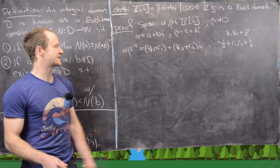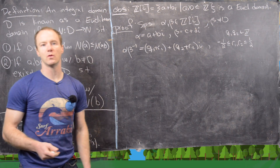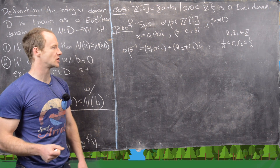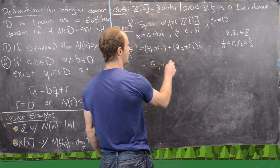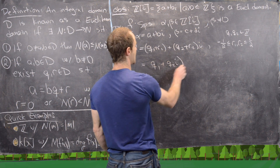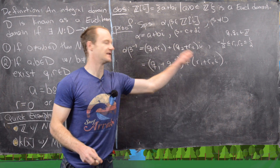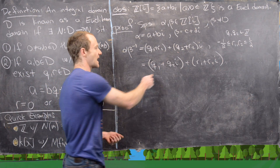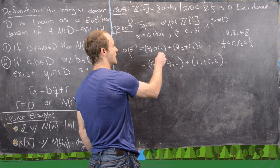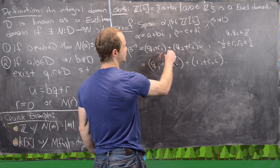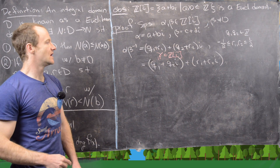We argued that we can take α·β⁻¹ and write it as (q₁ + r₁) + (q₂ + r₂)i, where q₁, q₂ are integers and r₁, r₂ are in [−½, ½]. Rewriting: this is (q₁ + q₂i) + (r₁ + r₂i). The first part is our quotient and the second is like our remainder. Since q₁ and q₂ are integers, this quotient γ = q₁ + q₂i is an element of ℤ[i].